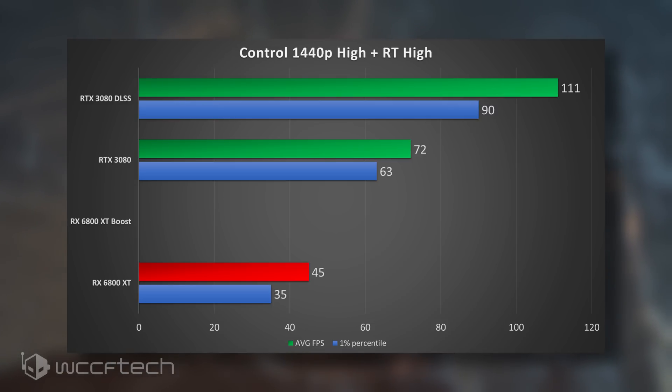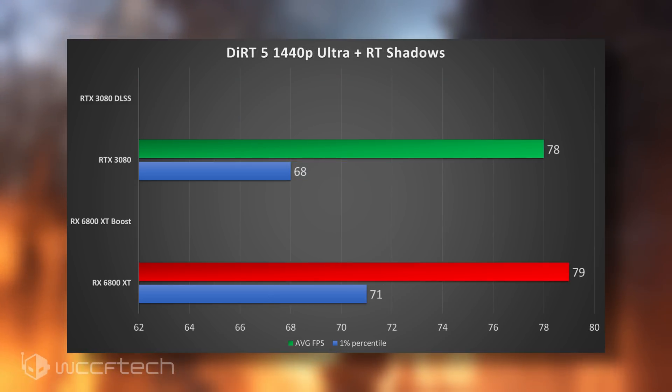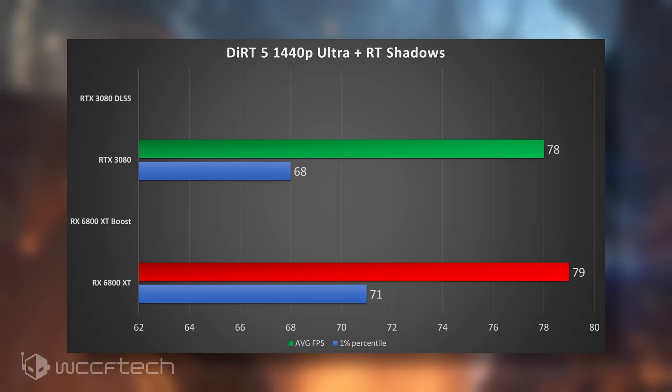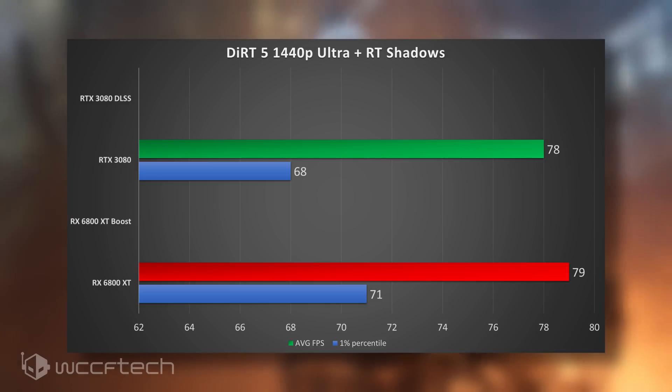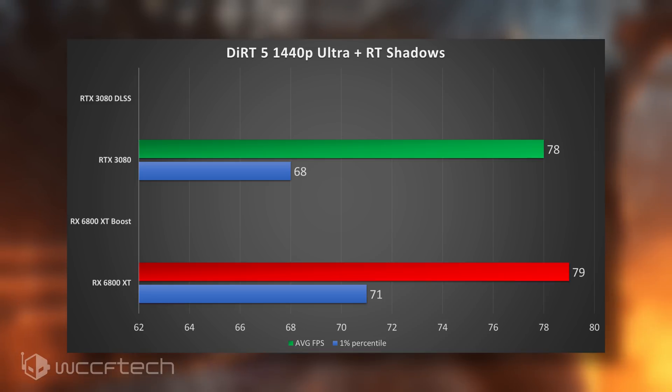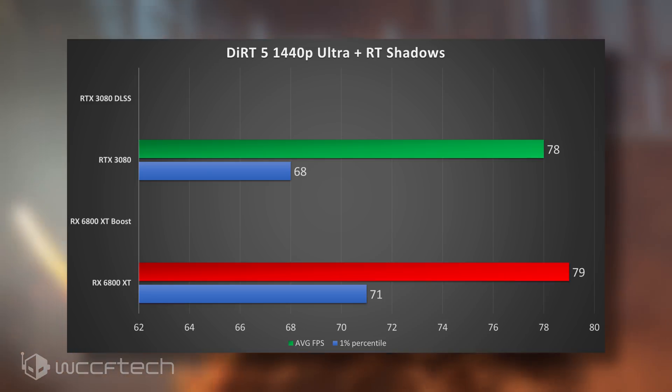The last game is Dirt 5, where Radeon is already performing quite well and there is no DLSS. This one suffers from the same issue as Control — you have to go with standard resolutions. Even the resolution modifiers don't show up in the title's resolution selection. There are a lot of variables with Dirt 5, so you just play around with that one.